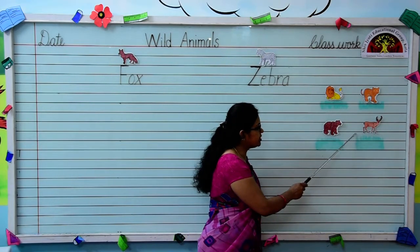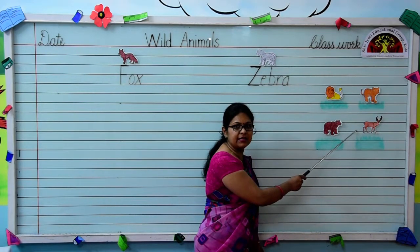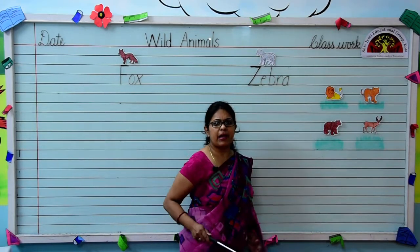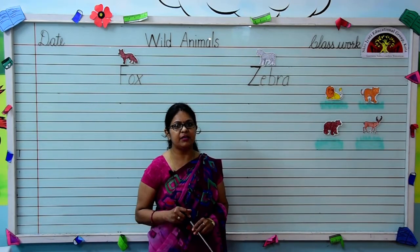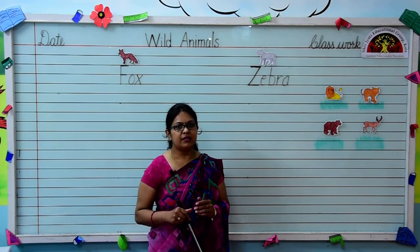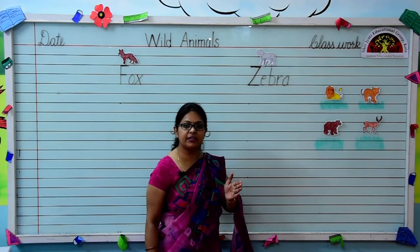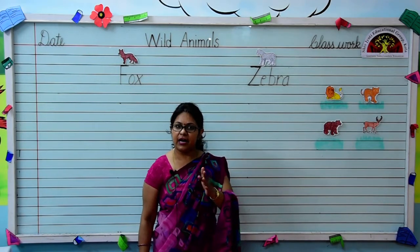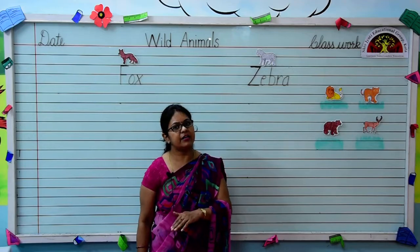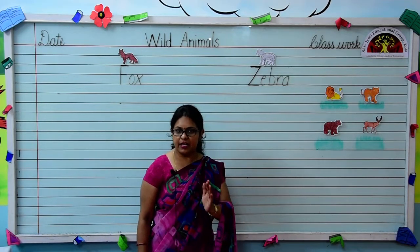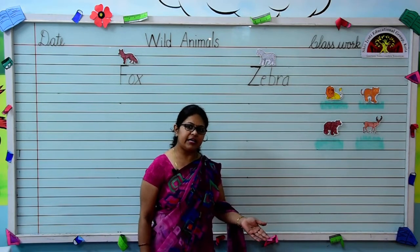And the last one is deer. This is deer. What is the spelling of deer? D-E-E-R, deer.